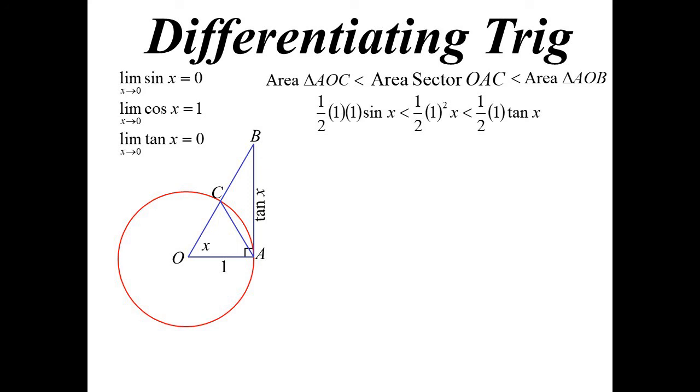So there's a little bit of cancelling there because they've all got a half. So x must be in between sine x and tan x. Now, if I rewrite that by dividing everything by sine x. Now, why do that? Well, because now I can rewrite it again. Sine x on sine x is 1.